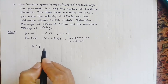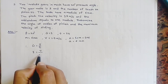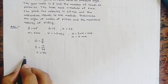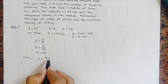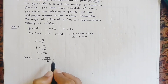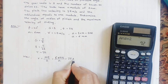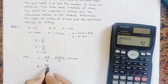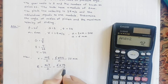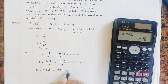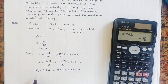First, we find the total number of teeth on the gear using the gear ratio: 3 = T / t = T / 24, so T = 72. The pitch circle radius of the pinion: r = m × t / 2 = 6 × 24 / 2 = 72 mm. The pitch circle radius of the gear: R = m × T / 2 = 6 × 72 / 2 = 216 mm. The addendum circle radius for the pinion: Ra = r + addendum = 72 + 6 = 78 mm.